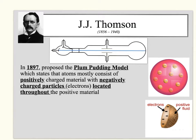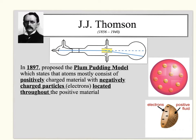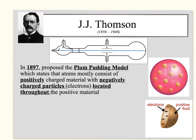He shot particles through the cathode ray tube, and the beam would go up or down, showing that there was a positive or negative charge. In 1897, he concluded the plum pudding model — a very popular dessert in England at the time. He stated that atoms consist of mostly positively charged material that has negatively charged particles, the electrons, located throughout the positive material.